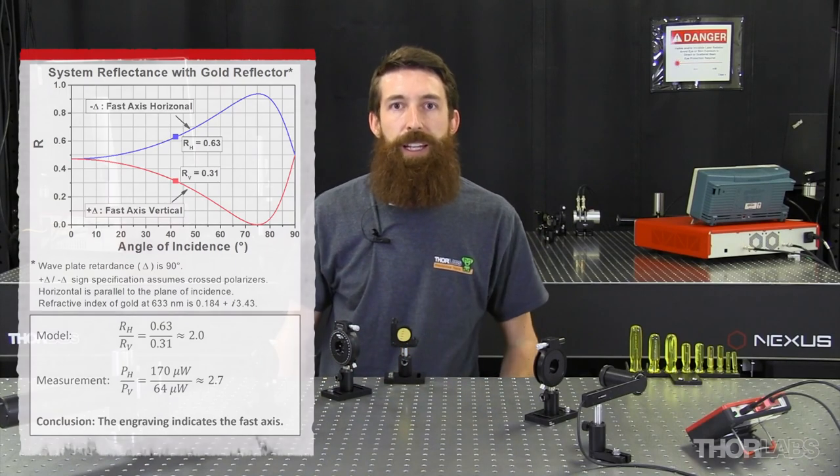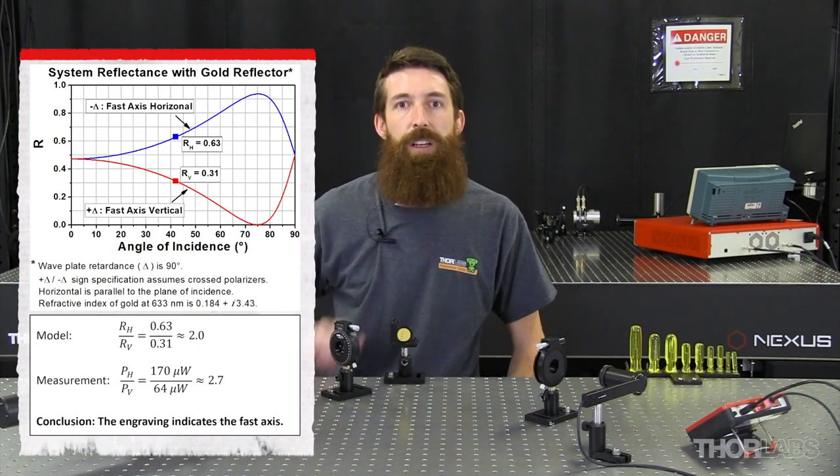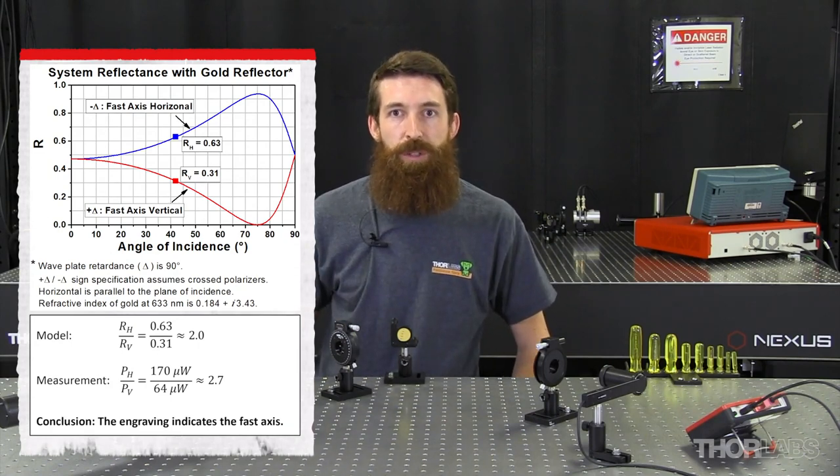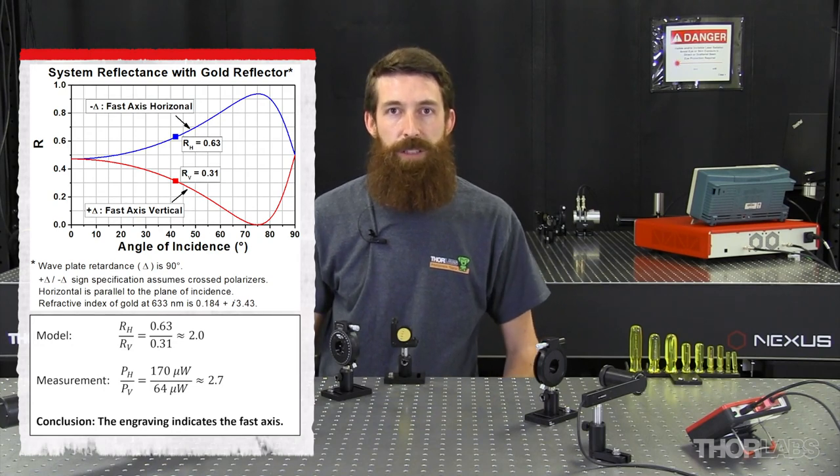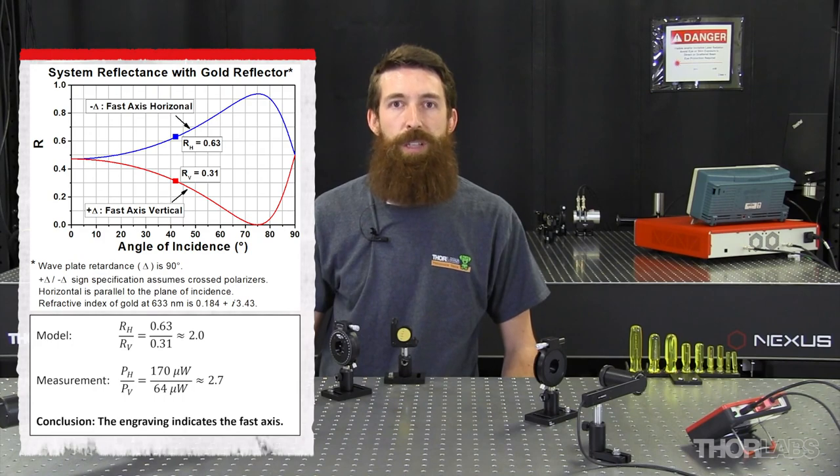By knowing the total amount of power through the entire system, I can then calculate the reflectance of each orientation, and correlate that to the two theoretical reflectance curves that I had calculated previously. And this will allow me to determine whether I'm aligned with my fast or my slow axis.